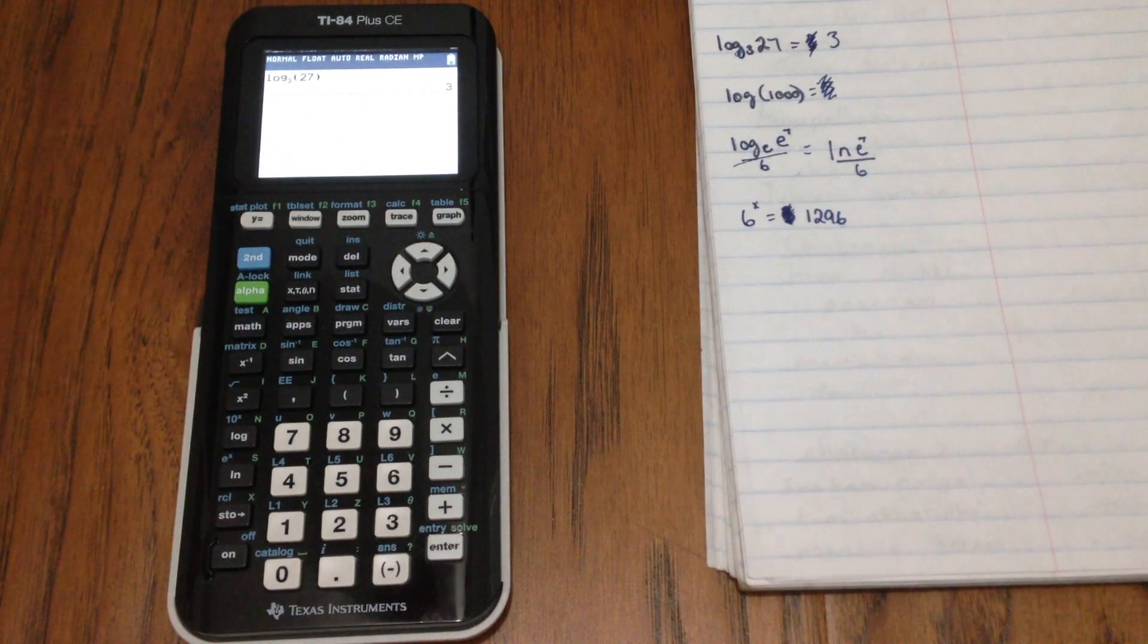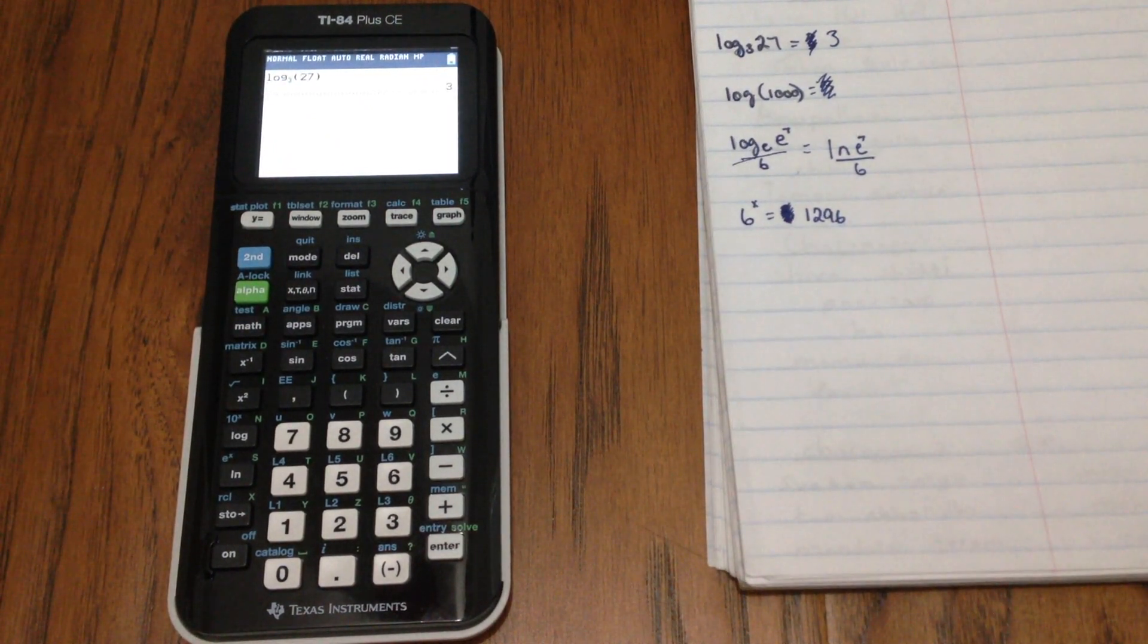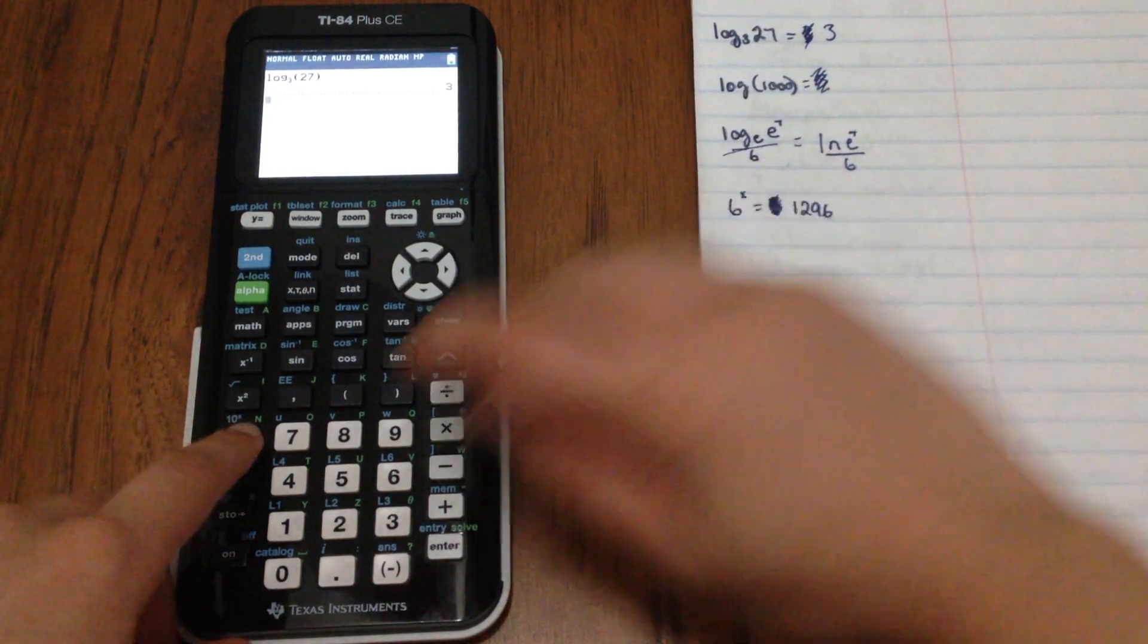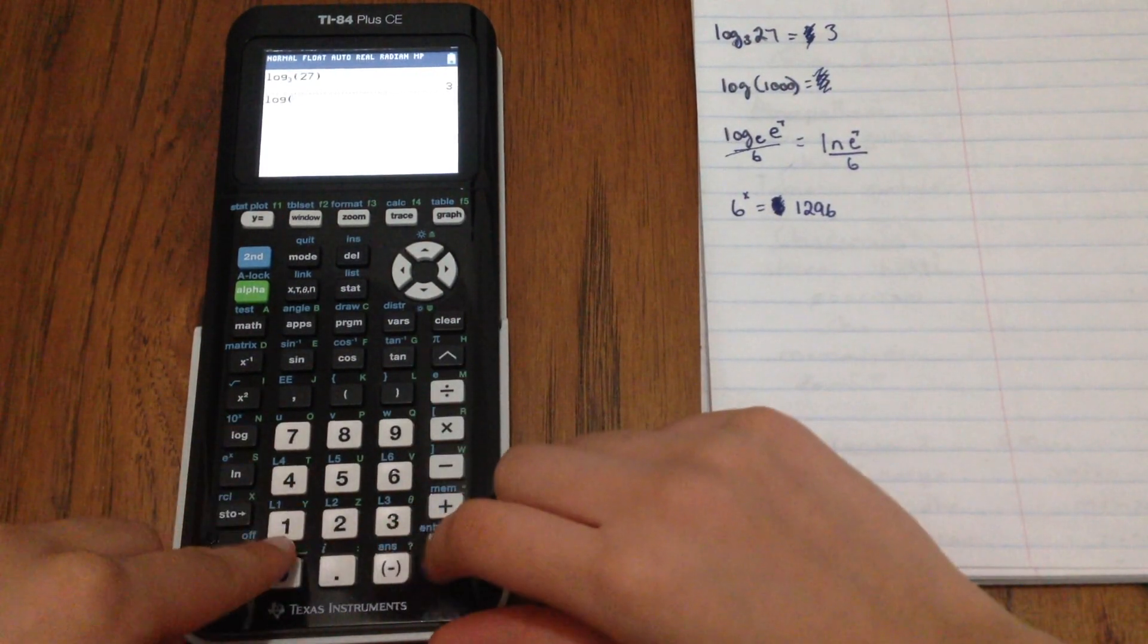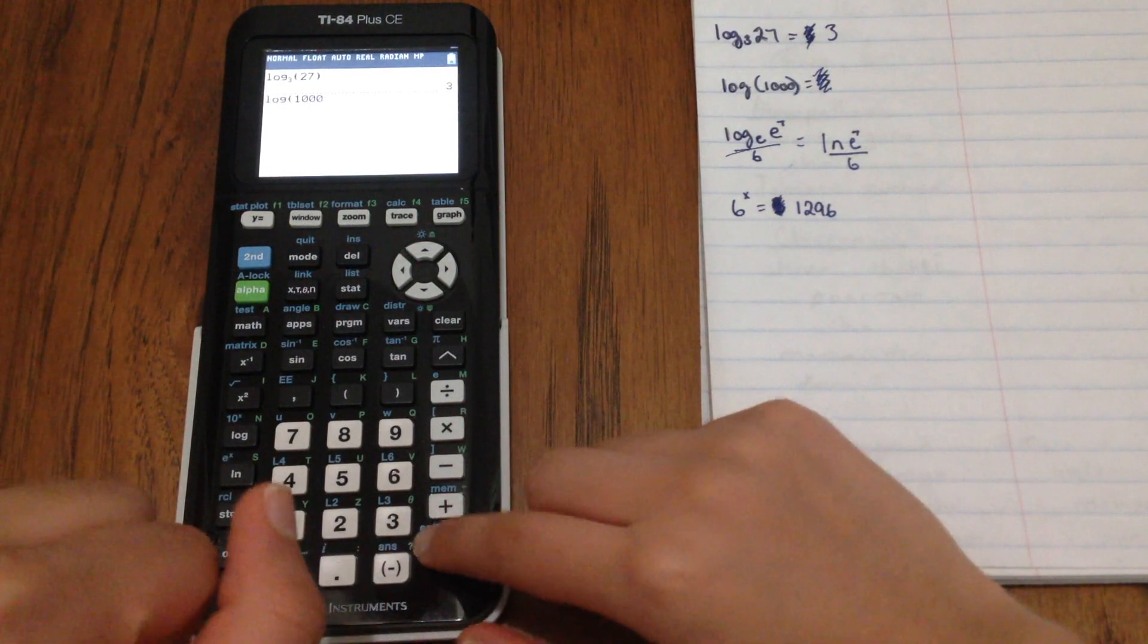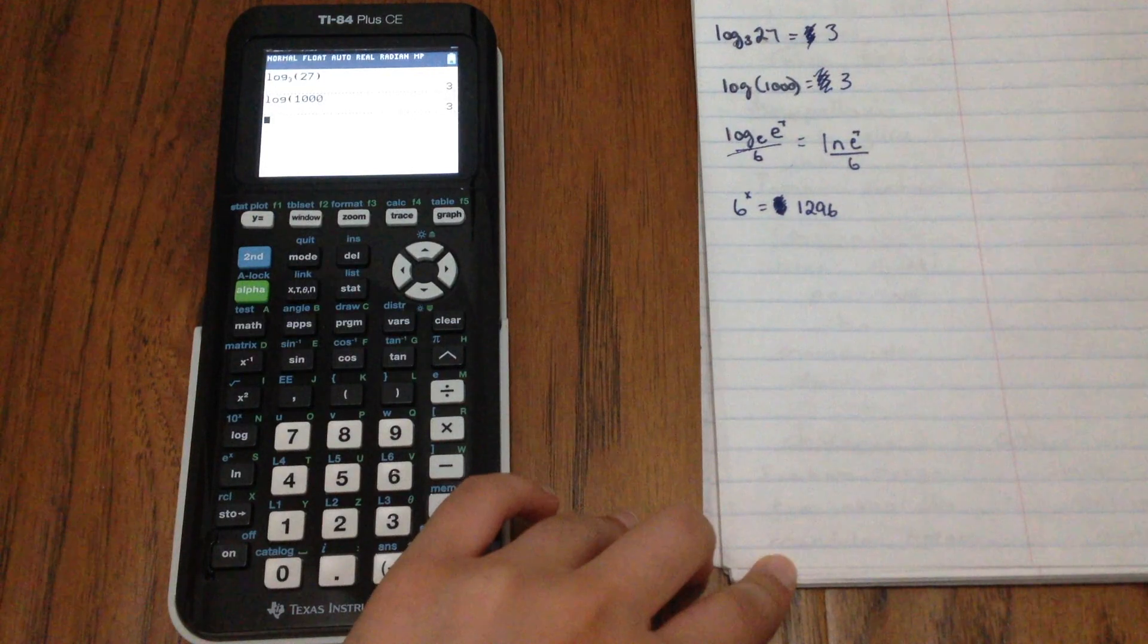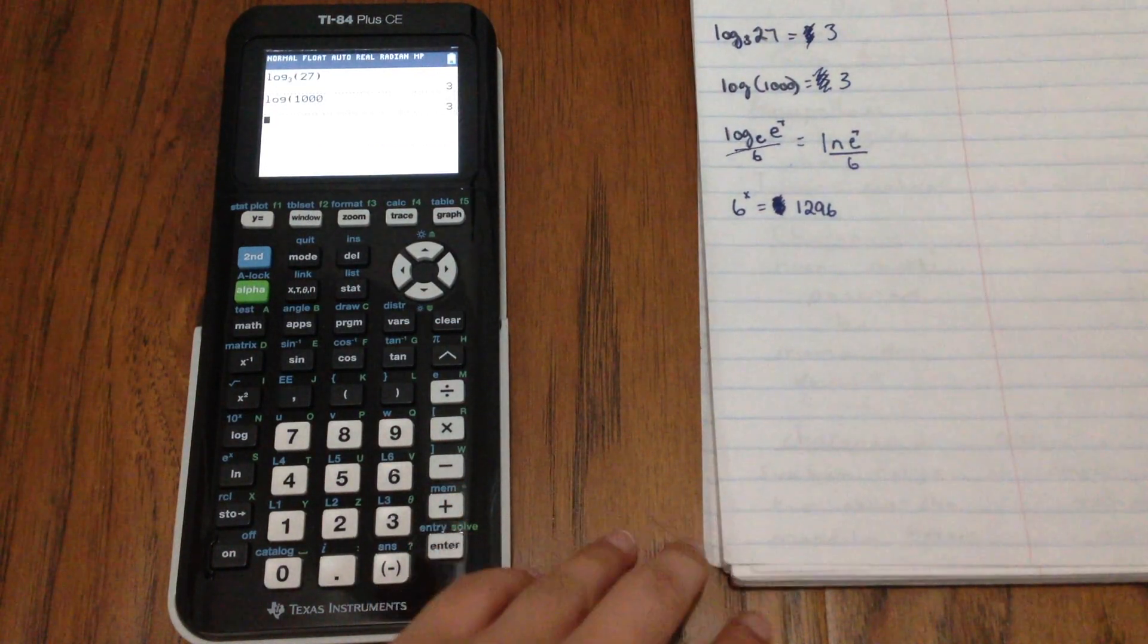Okay. So for our next one, we can see that it is a base 10 logarithm. So we can just use our button there and click 1000 and we get our answer and it is also 3. I've chosen some easy numbers with those first two.